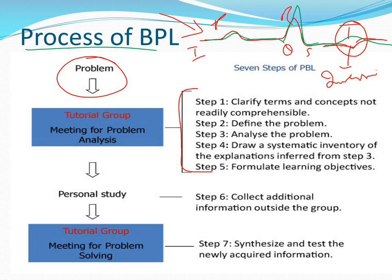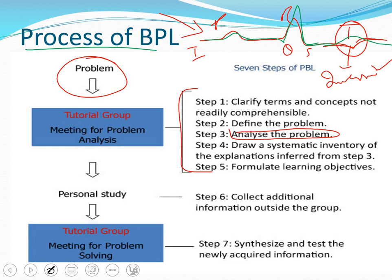The first step is to clarify the terms and concepts. Then, from step one to step five: define the problem, analyze the problem, draw a systematic inventory of explanations, and formulate the learning objectives. Once students analyze the problem — for example, identifying T-wave inversion in the ECG — they may then formulate their learning objectives. Learning objectives or learning outcomes are settled in this first stage of PBL.